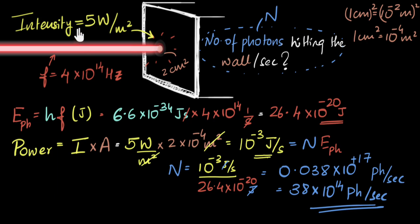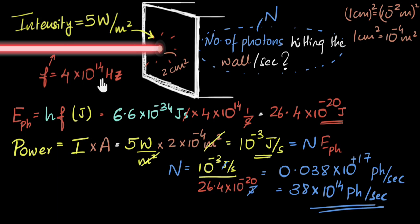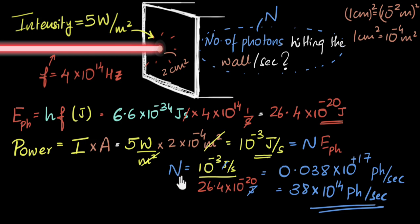Finally, I have a couple of bonus questions. What if I were to increase the frequency of light but kept the intensity exactly the same — would there be more or fewer photons hitting this wall per second? If I increase the frequency, the energy of each photon would increase. That means each photon is now carrying more energy, so I would need fewer photons to carry the same total energy. The number of photons should reduce.